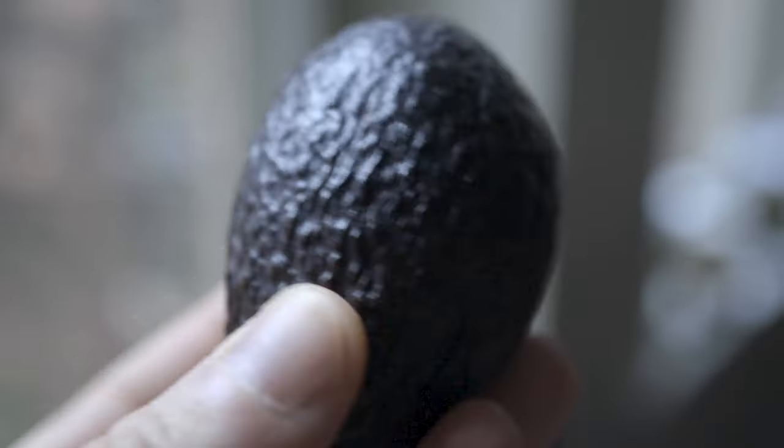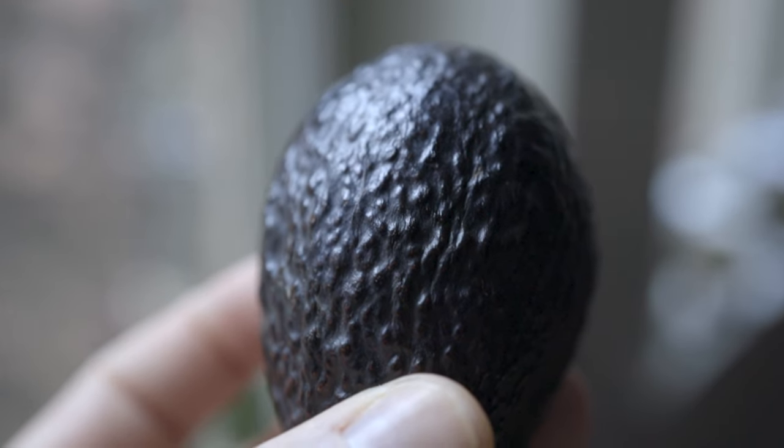This is an avocado. It has one of the weirdest skins. When you look at it closely, it resembles the skin of a humpback whale.